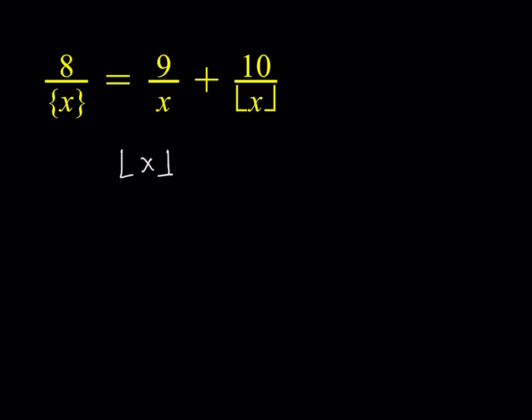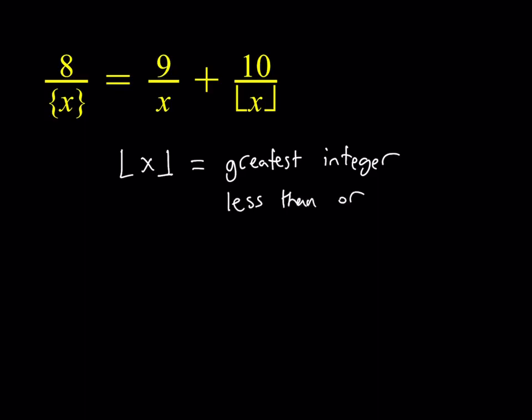The floor value of x is basically the greatest integer — it's also called the greatest integer function — less than or equal to x. We could define it as rounding the number down to the nearest integer, and since we're always rounding down, it always needs to be less than or equal to x.